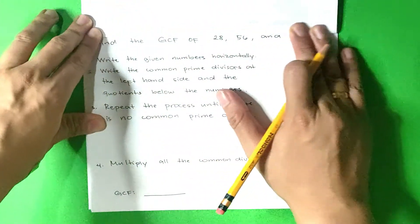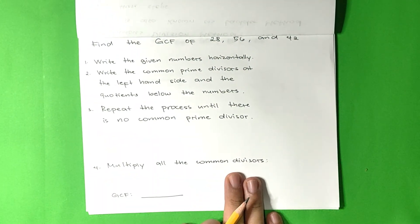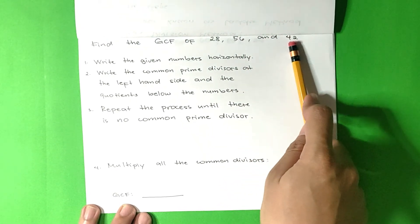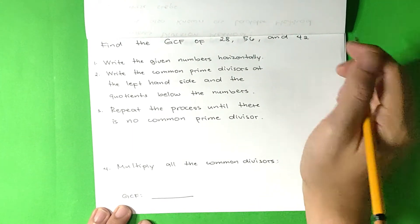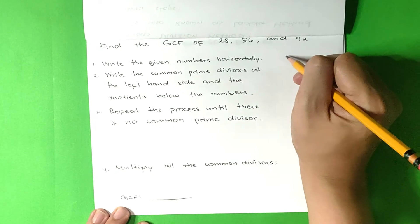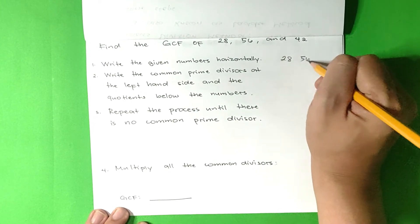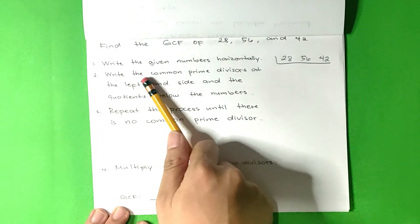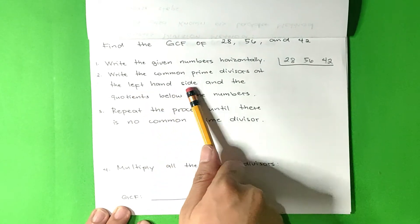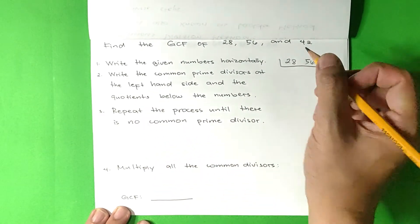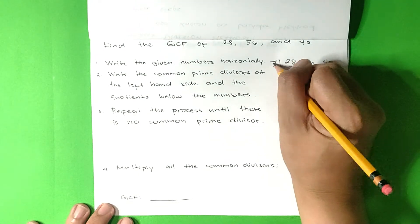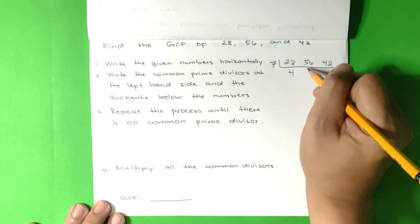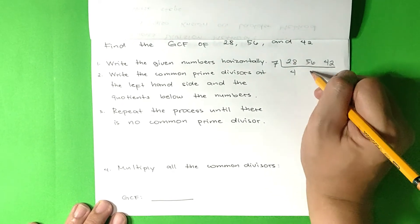Let's have another example. Let us find the GCF of 28, 56, and 42, following the same steps. Step 1: Write the given numbers horizontally — 28, 56, 42. Step 2: Write the common prime divisors at the left-hand side. Let's use 7. 28 divided by 7 is 4. 56 divided by 7 is 8. 42 divided by 7 is 6.